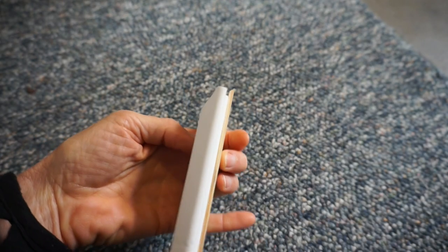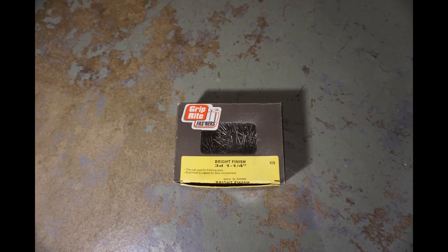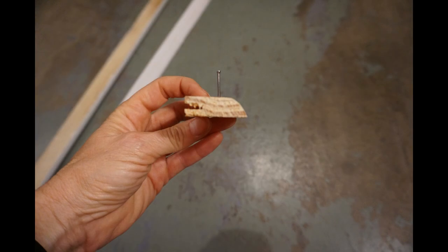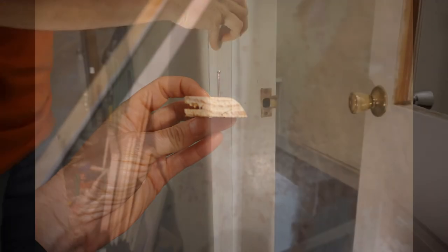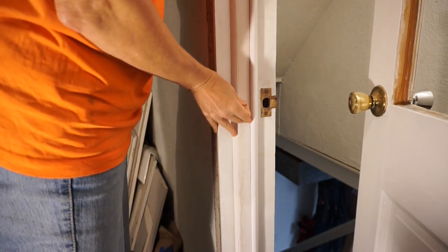Install the weatherstripping onto the moldings. Tap finish nails into the top, center, and bottom of the latch side molding. Align the edge of the weatherstrip with the mark you made near the door latch.